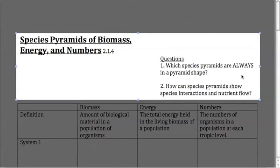Which species pyramids are always in a pyramid shape, meaning they will always be in a triangular shape? And two, how can species pyramids show species interaction and nutrient flow?